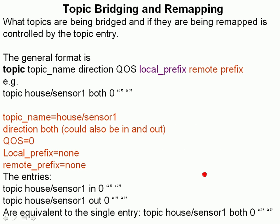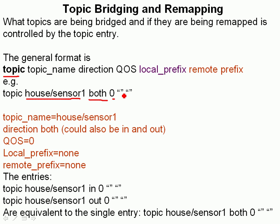Let's quickly go through the format. The general format is: the keyword 'topic', followed by the topic name, followed by the direction — which can be 'in', 'out', or 'both' — followed by the quality of service, a local prefix, and a remote prefix. For example: topic, the actual topic, direction 'both', quality of service, local prefix, and remote prefix. You can leave them blank.